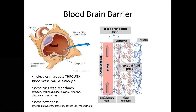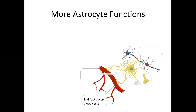Looking at a longitudinal section, you can see the blood vessel on the left with its endothelial cells and tight junctions between the cells. We also have tight junctions between the astrocytes and the endothelial cells themselves. The astrocytes are controlling what appears in the interstitial fluid — in other words, what's going to be affecting the neurons in that area locally. There are more functions to astrocytes besides forming the blood-brain barrier.